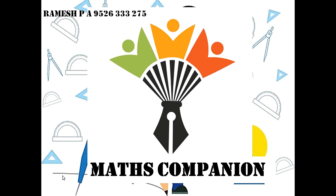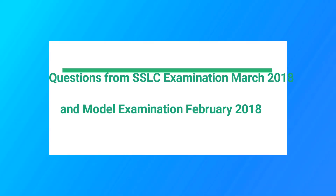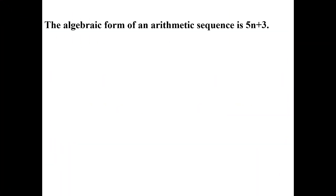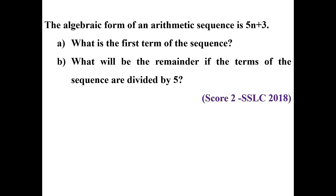Today we are going to discuss questions related to arithmetic sequences from two previous question papers: SSLC examination marks 2018 and model examination February 2018. The algebraic form of an arithmetic sequence is 5n plus 3. What is the first term of the sequence? What will be the remainder if the terms of the sequence are divided by 5? This is a question from SSLC 2018 with a score of 2.